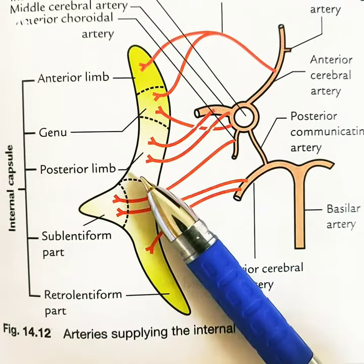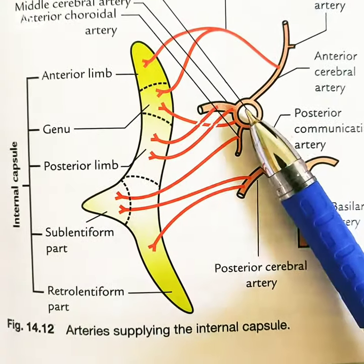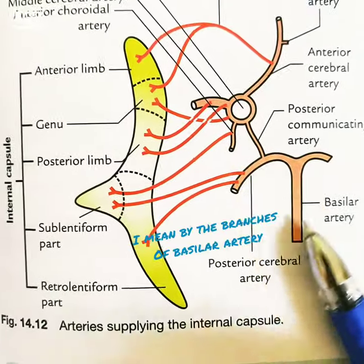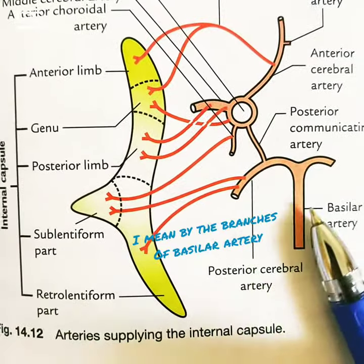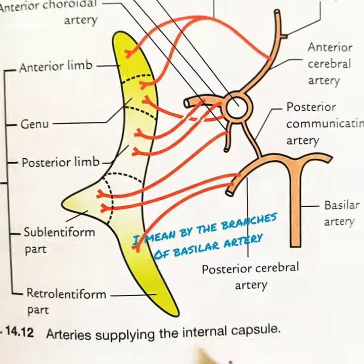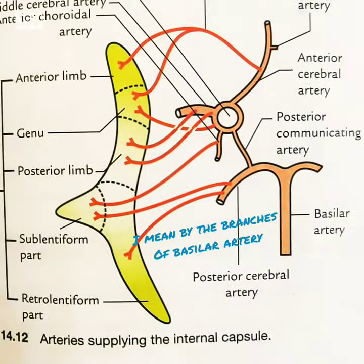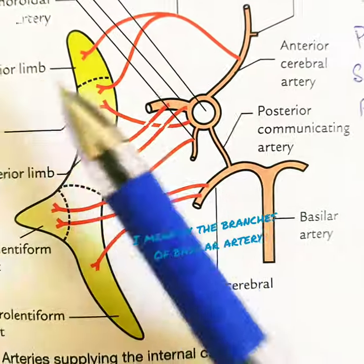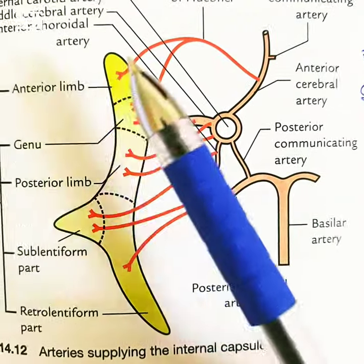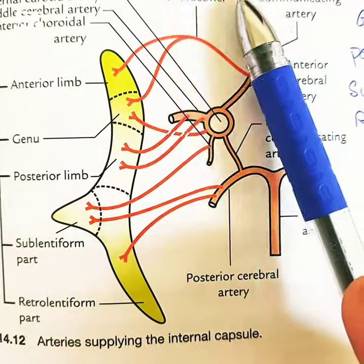The blood supply of these parts is supplied partly by the internal carotid artery and partly by the basilar artery and its branches, but mainly by the circle of Willis. Now from anterior to posterior, the anterior limb is supplied by the recurrent artery of Heubner.